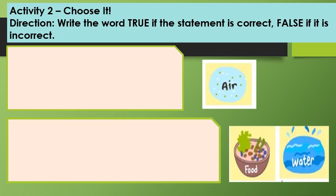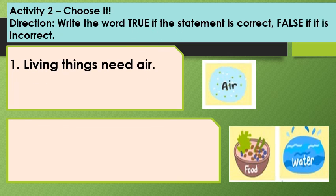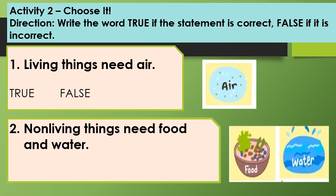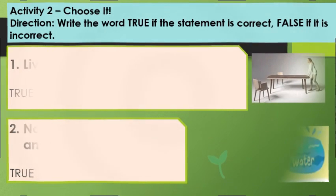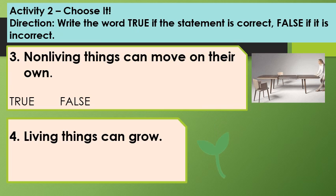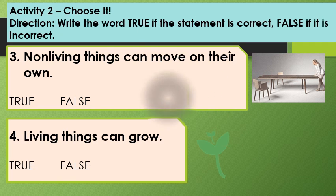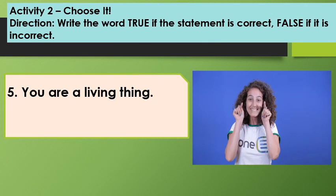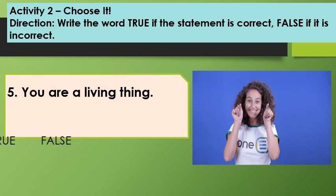Activity two: Choose it. Write the word true if the statement is correct, false if it is incorrect. Number one: Living things need air. True or false? Number two: Non-living things need food and water. True or false? Number three: Non-living things can move on their own. True or false? Number four: Living things can grow. True or false? Number five: You are a living thing. True or false?